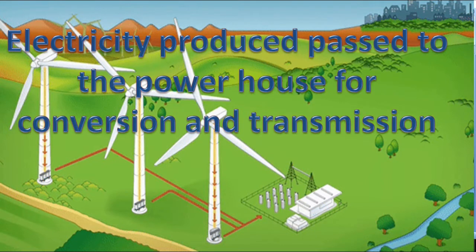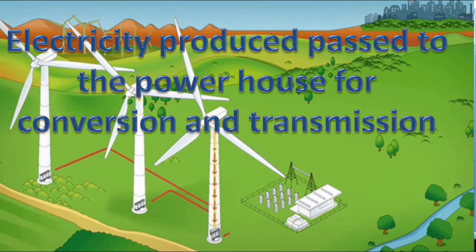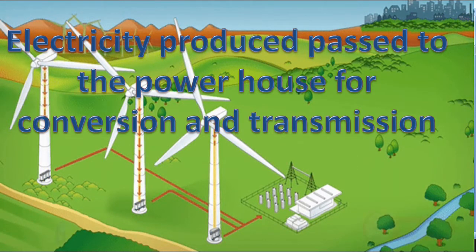Electricity produced by the windmill is passed to the powerhouse for conversion to high voltage and transmission for various uses.